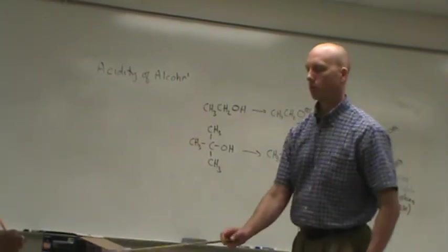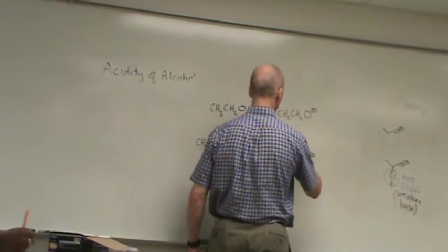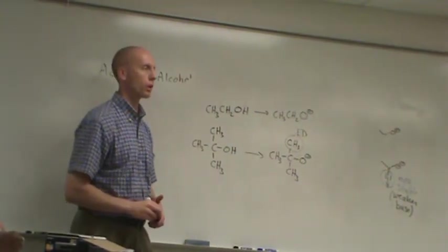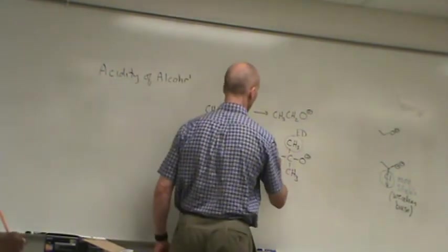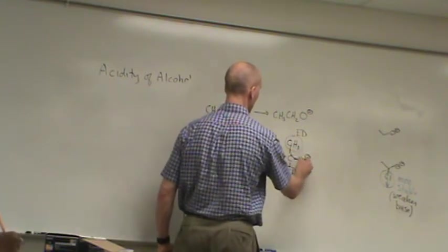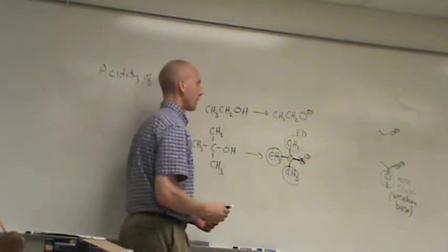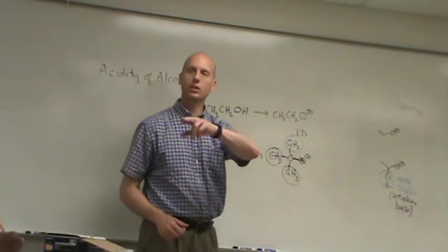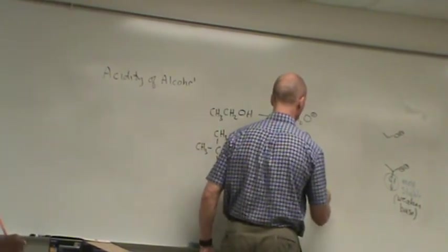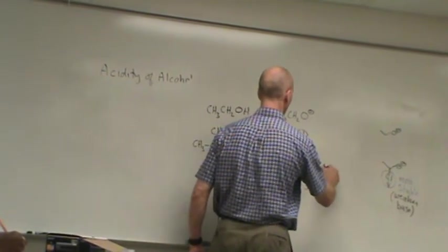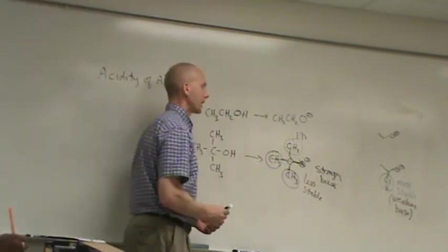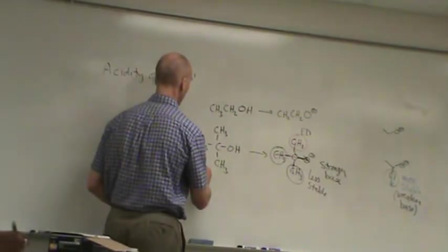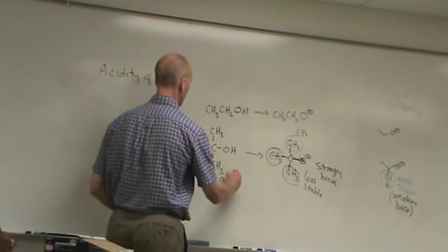Here, what we need to learn is that methyl groups are electron donating groups. Remember we learned that for carbocation stability. So here I have three electron donating groups. So they are going to push electrons toward the oxygen. So what is that doing to this conjugate base? Making it less stable.